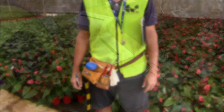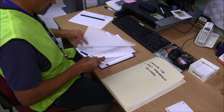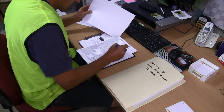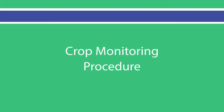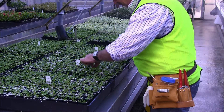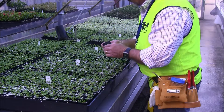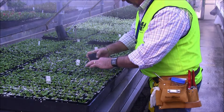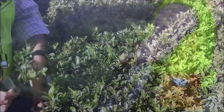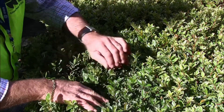Prior to undertaking crop monitoring activities, review the previous year's crop monitoring and site surveillance records. Begin each crop monitoring process in sterile or clean areas, or those of high risk, such as propagation facilities or crop hardening off areas.